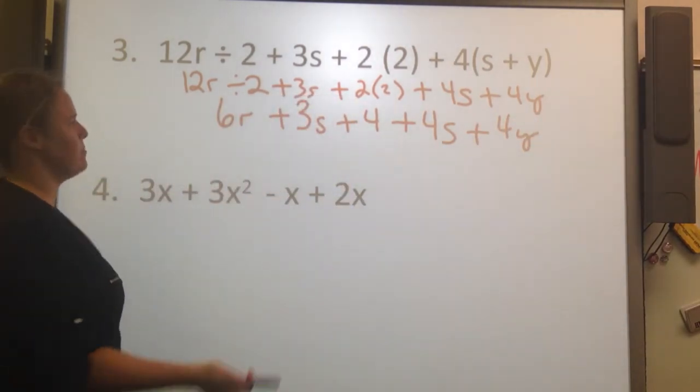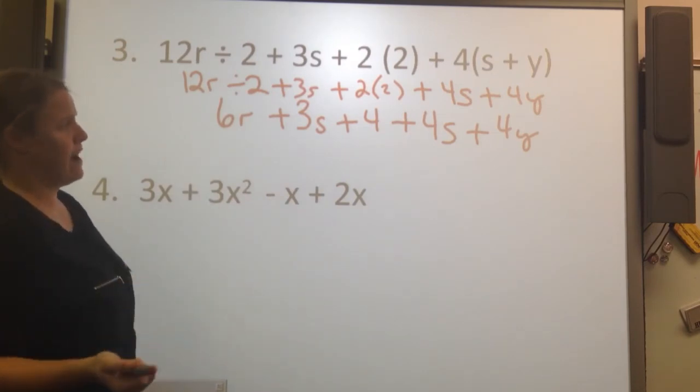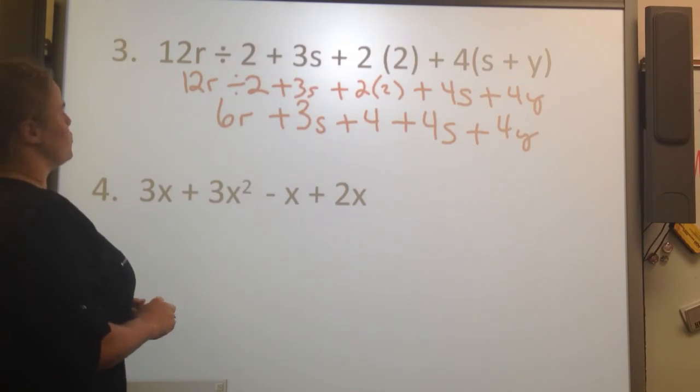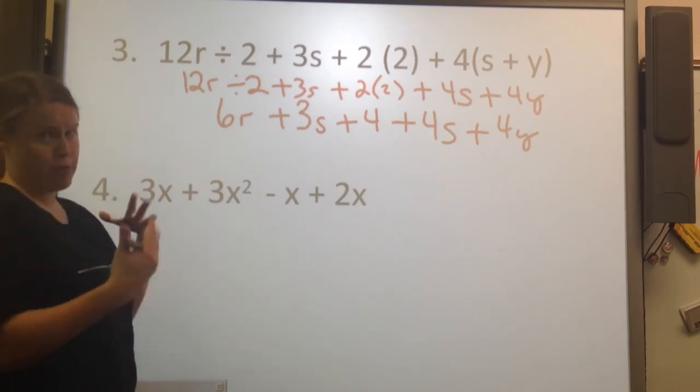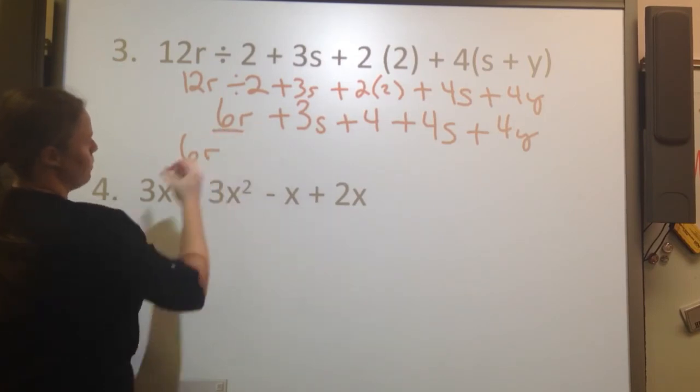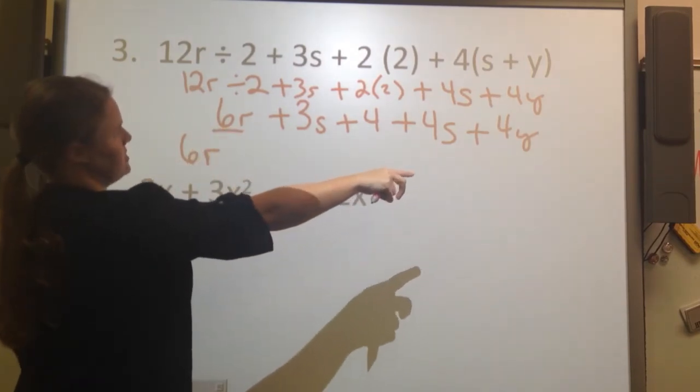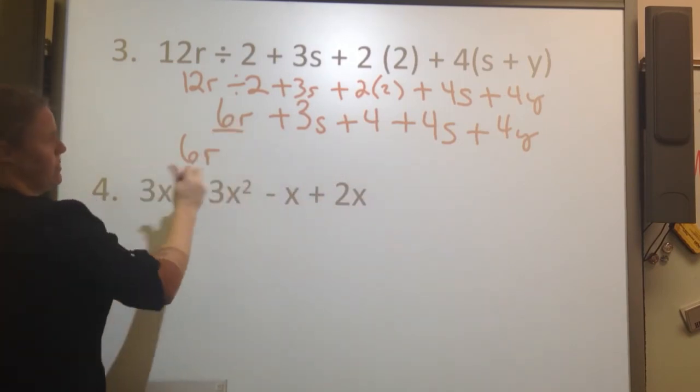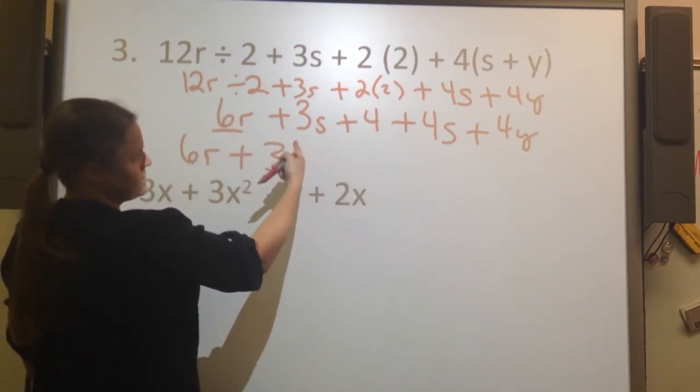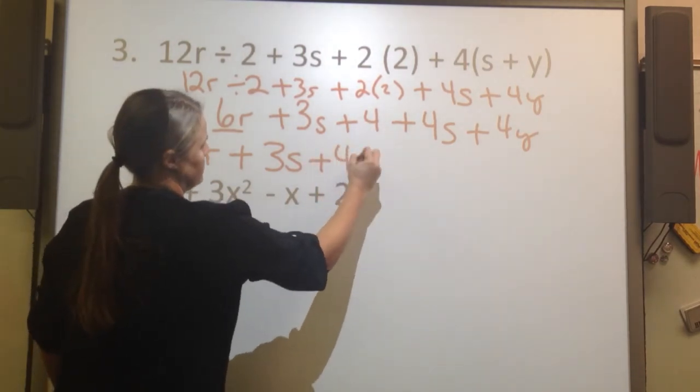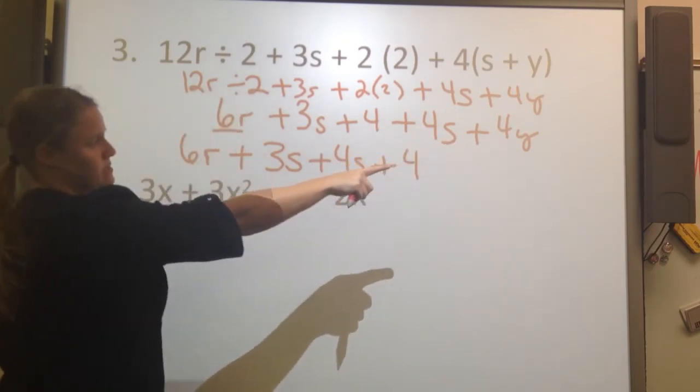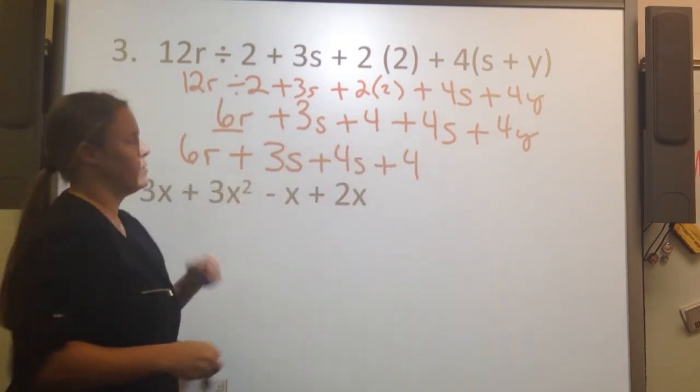Handwriting is pretty important right now, so your s's look like s's and not 5's. Mine's getting close, so be very careful. So now I'm going to group my problem together. I've got 6r, so I've used that one, and I don't have any other r's in this problem, so I'm done with that one. Let me get my s's together. I have 3s and a 4s. And then I have a constant of 4, no other constants. And then I have another variable of 4y.